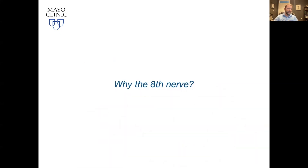Why do vestibular schwannomas — also called acoustic neuromas — develop on the eighth nerve? The fifth nerve is much bigger, and the fourth nerve is longer, so why wouldn't tumors develop there more often? One theory is that the eighth nerve has a very high Schwann cell density. The idea is that the more Schwann cells you have, the greater the statistical probability of developing a schwannoma.